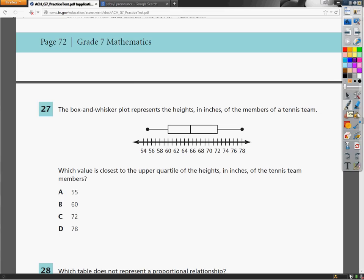7th grade TCAP practice test, question number 27 in the math section. The box and whisker plot represents the heights in inches of the members of a tennis team. Which value is closest to the upper quartile of the heights in inches of the tennis team members?